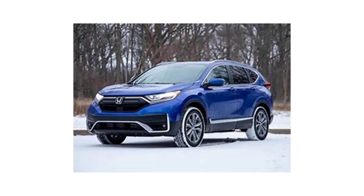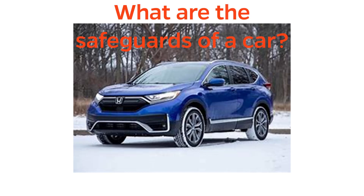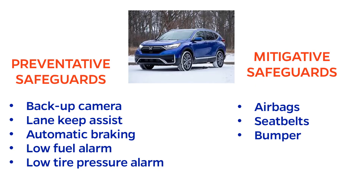Although a car is far from a chemical process, it's something that we use nearly every day, and it has plenty of safeguards, which might be interesting to think about as examples. Preventative safeguards include backup cameras, lane keep assist systems, automatic braking, low fuel alarms, and low tire pressure alarms — in other words, stuff that keeps the driver's attention on the road or lets the driver know if something isn't working like it should.